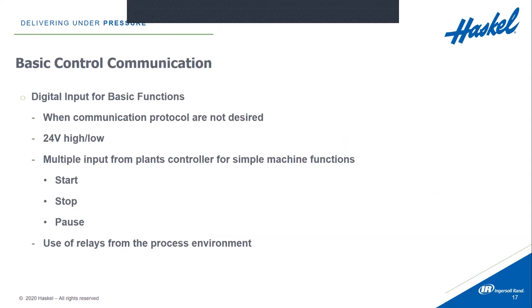If advanced communication protocols aren't present in your plant already, you can use just 24-volt high-side signaling with relays. This is already pre-built into the Q-Drive. You won't have your full advanced features where you would send specific tag values from all your IO in the system, but you could at least use existing automation in your plant and use relays or 24-volt high-side signaling to do simple machine functions like start, stop, and pause. For example, when you're ready to start boosting gas, you could just send a simple signal and have the Q-Drive start up and start pumping gas for you.